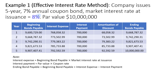In this case, the market rate at issuance of 8% is greater than the annual coupon rate of 7%. So we will have a discount bond — the bond will be issued at a discount to the par value of $10 million.